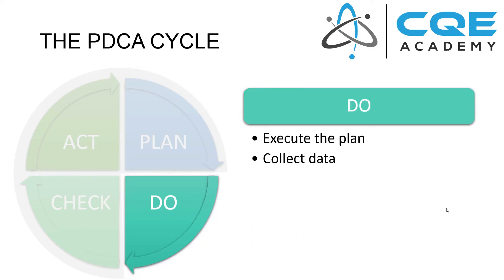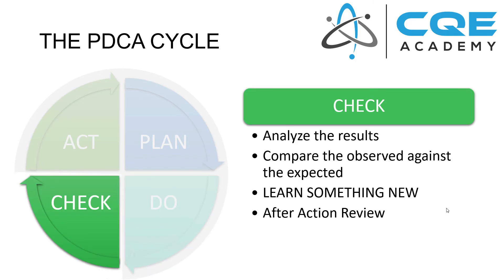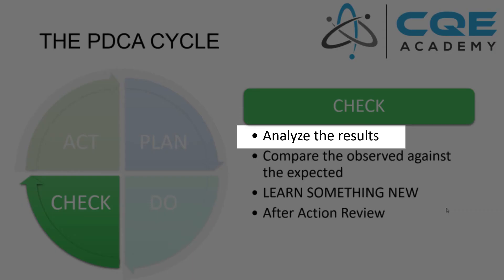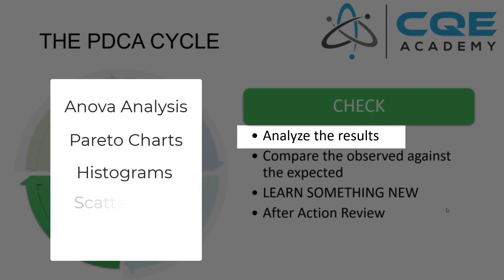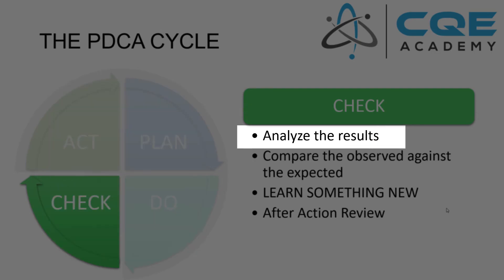Then in the do phase, it's quite simple — we want to execute the plan and collect data. We can then take that data and do the analysis. This is where we can use statistical tools like ANOVA analysis, Pareto charts, histograms, scatter plots, and hypothesis tests. A lot of the statistical methods and tools that we talk about in quality engineering — this is the time to use those tools to analyze our results.